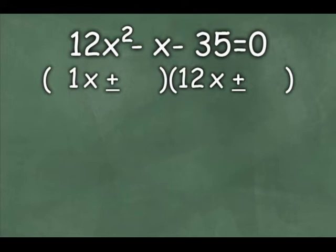For instance, 1x and 12x would multiply to give you 12x squared. So that 1 and 12, which are on the left side of those sets of parentheses, came from that left column on a previous slide. And then the 1 and the 35 are an option that would multiply to the 35. So let's test it and see what happens.